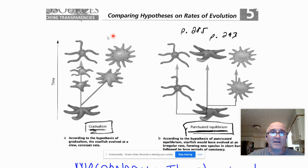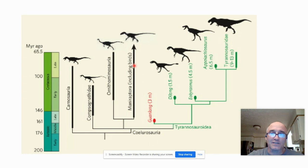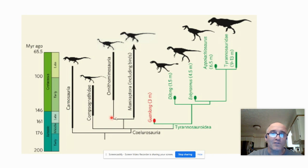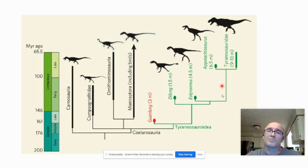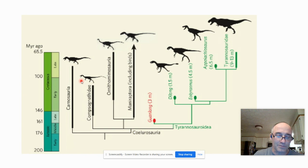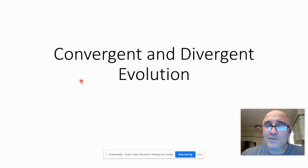Here are a couple pictures — this would be gradualism on the left and punctuated equilibrium on the right, where you see slow incremental changes versus rapid change and then things just staying the same. This is an actual evolutionary tree, or phylogenetic tree, of some dinosaurs. On the left side you see some things that evolved very quickly and then kind of stayed the same — that's punctuated equilibrium. This group on the right shows steady gradual changes over a longer period of time — that's gradualism. Typically you see gradualism more so than punctuated equilibrium in the fossil record.